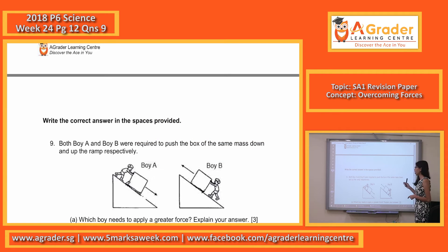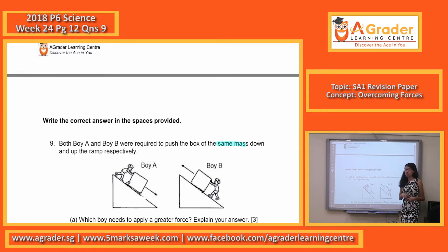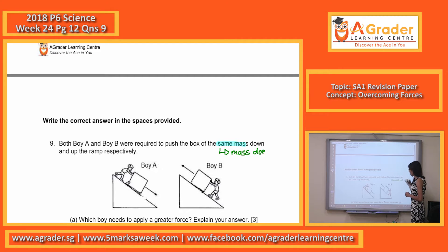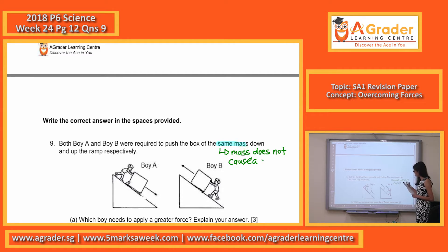Now let's look at question 9. Both boy A and boy B were required to push the box of the same mass down and up the ramp respectively. Since the mass is the same, mass does not cause a difference in the gravitational force acting on both boxes.